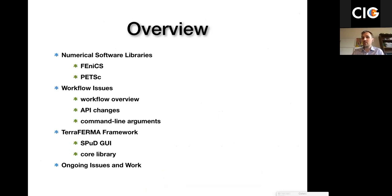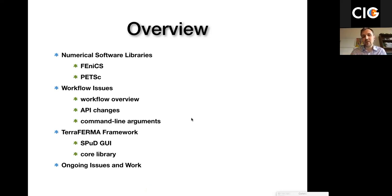I'm going to start by talking about some numerical software libraries in a very general sense, before focusing on some examples of using FEniCS — the finite element library — and PETSc — the numerical linear algebra computational science library. I'll then discuss some issues that we ran into when we were starting to use these tools, which led us to develop TerraFirma. I'll give an example of using TerraFirma from a user perspective and from a developer perspective, and then open it up for discussion on ongoing issues and future work.